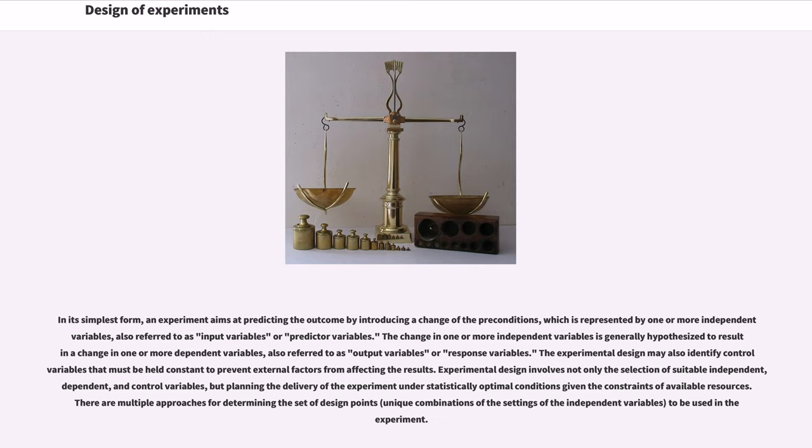The experimental design may also identify control variables that must be held constant to prevent external factors from affecting the results. Experimental design involves not only the selection of suitable independent, dependent, and control variables, but planning the delivery of the experiment under statistically optimal conditions given the constraints of available resources. There are multiple approaches for determining the set of design points, unique combinations of the settings of the independent variables, to be used in the experiment.